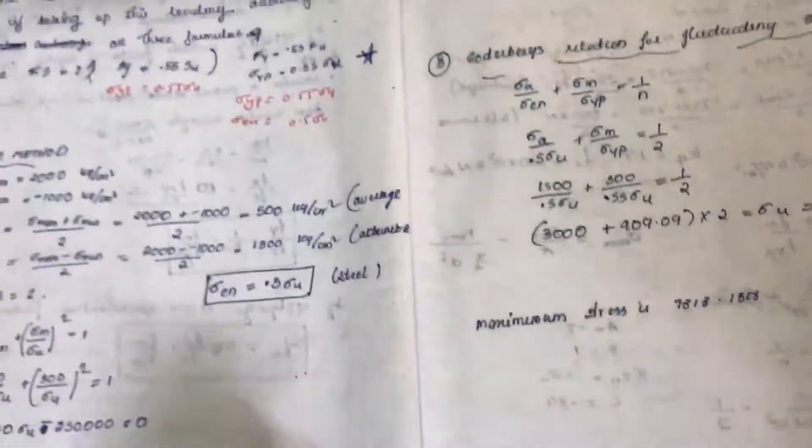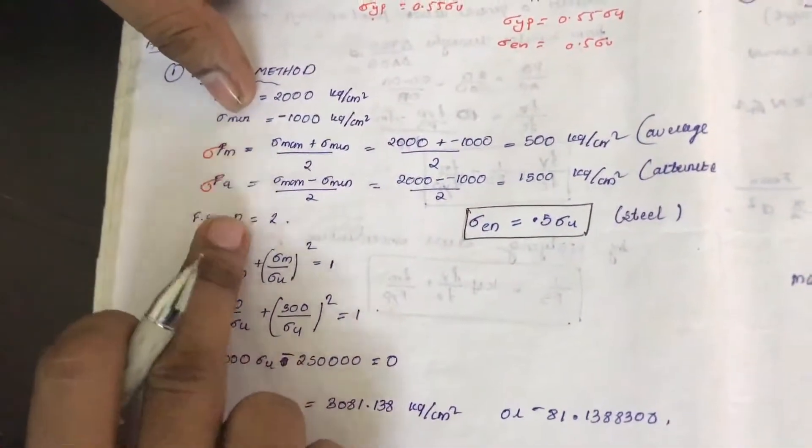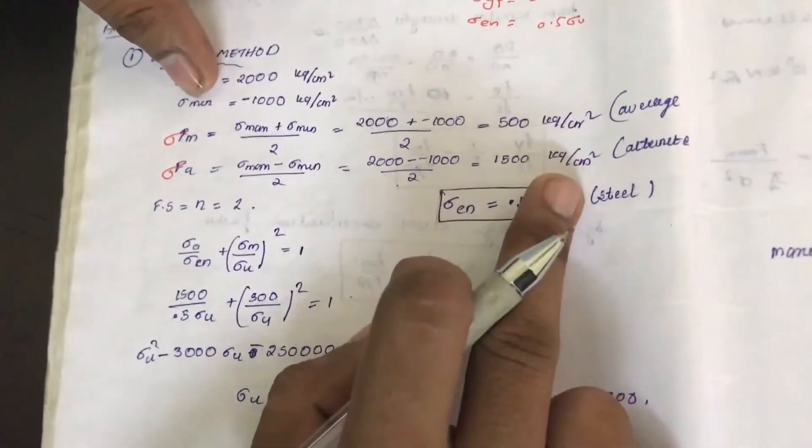So here sigma max is given, sigma minimum is given. That means we can find sigma m and sigma a by this one. So we have obtained sigma m and sigma a.